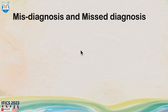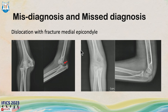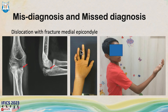The first scenario to highlight is where the fracture occurs in association with an elbow dislocation. The first step is reduction of the elbow dislocation. But there are times when the surgeon may fail to notice that with the dislocation, the medial epicondyle fragment has become incarcerated into the joint. If this is not identified immediately, it can have serious consequences.